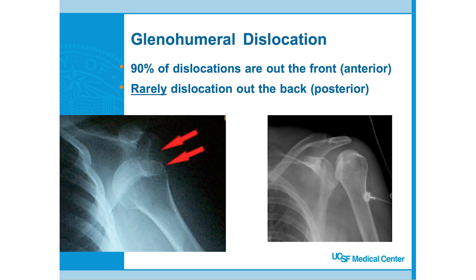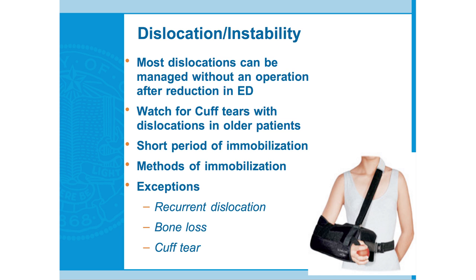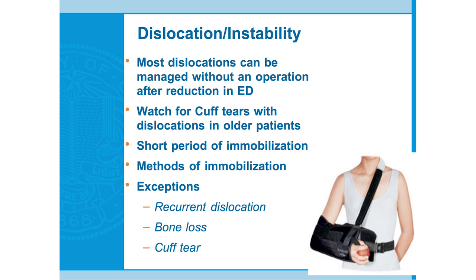Treatment: the ER reduces the patient and we try non-operative treatment as first line. We generally don't operate on first-time dislocations unless there are extenuating circumstances — such as an older patient with an associated rotator cuff tear, or a younger patient who has avulsed a large piece of bone. Generally, first-time dislocators get immobilization for a short period then physical therapy. Exceptions for surgery include those specific scenarios.